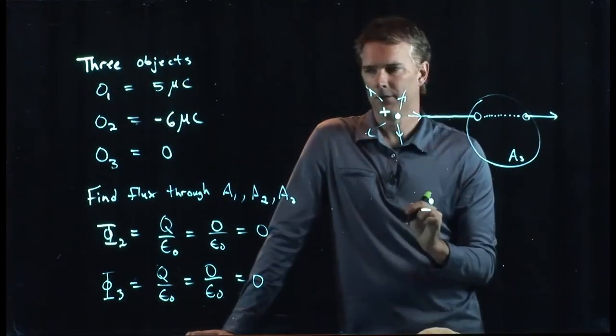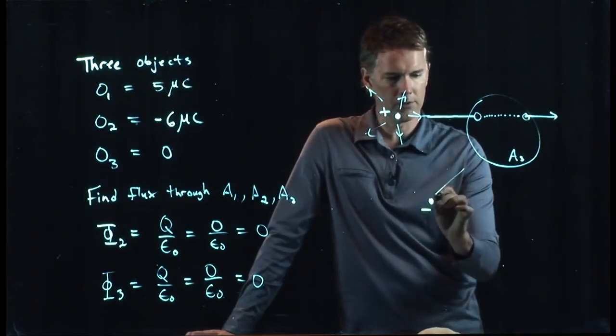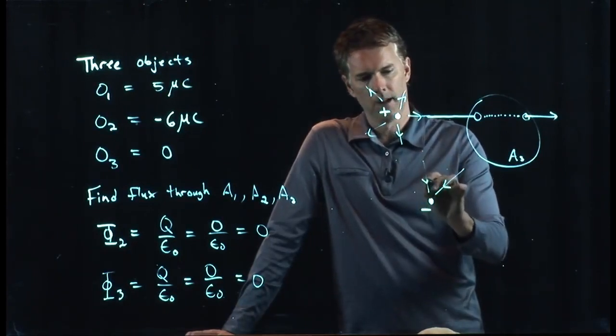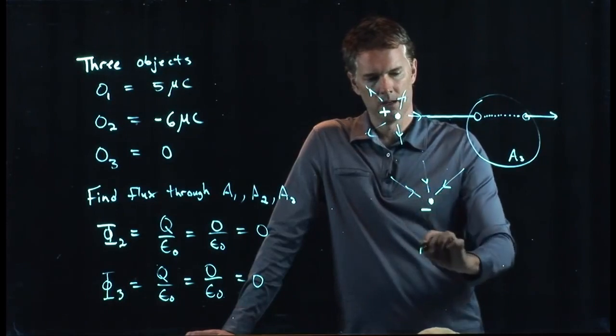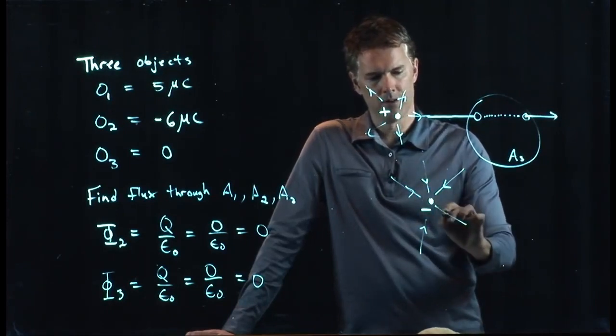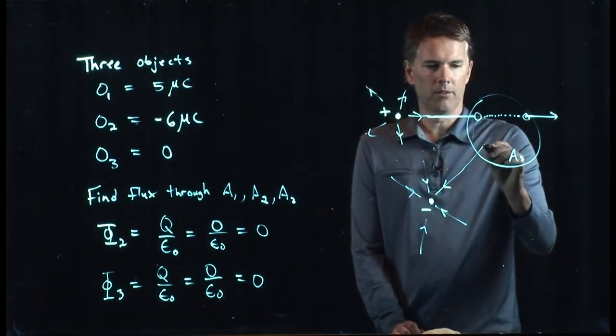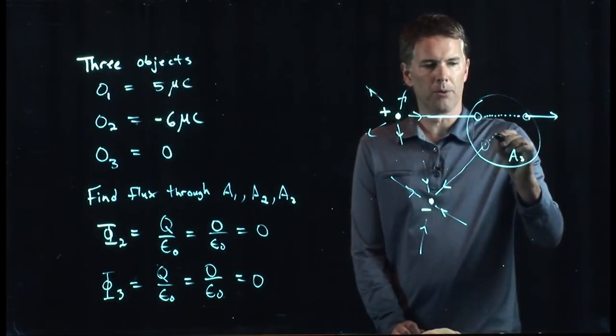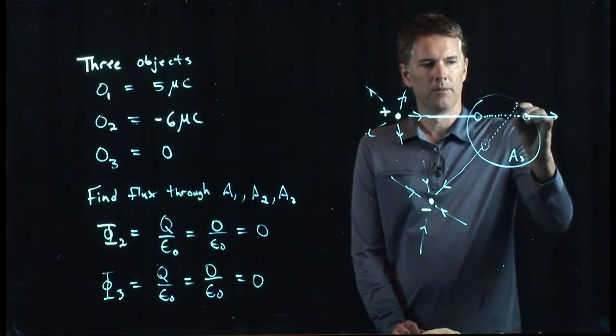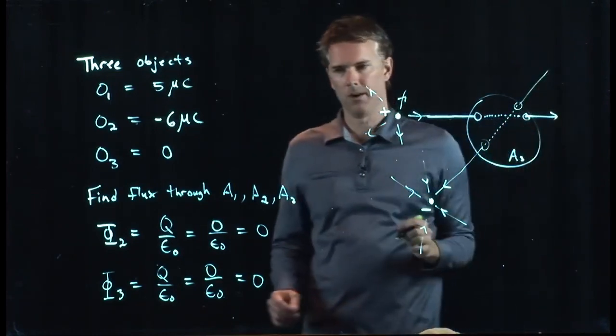And we don't have to draw that one. Let's think about the negative charge. The negative charge also has field lines, but it's coming in to the negative charge. But this line came in from much further out, so it had also gone through A3.